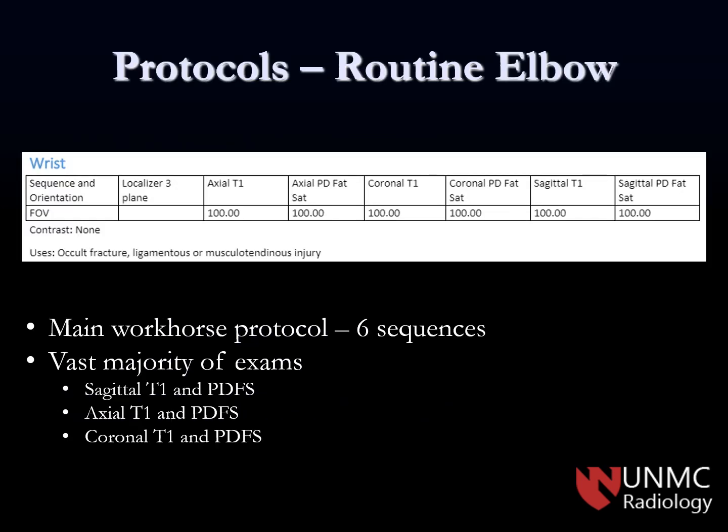The routine elbow MRI has six sequences: axial, coronal, and sagittal T1 and PD fat-saturated images. It's a simple, fairly straightforward protocol used for the vast majority of all studies — occult fractures, ligamentous and musculotendinous injury, basically the spectrum of routine elbow pathology.